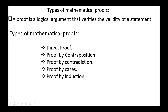Next, types of mathematical proofs. There are several known types: direct proof, proof by contraposition — which is an example of indirect proof — proof by contradiction, proof by cases, and proof by induction.